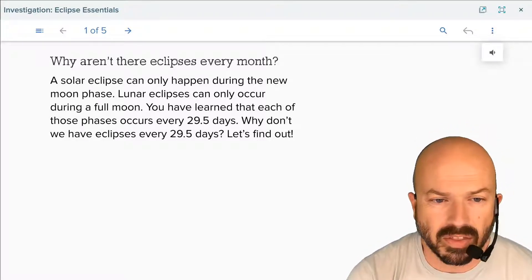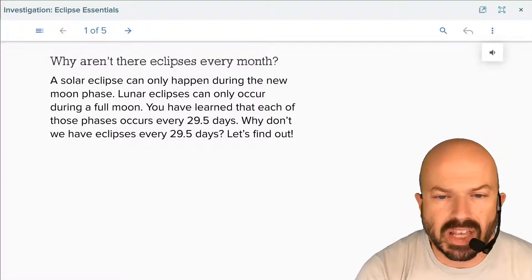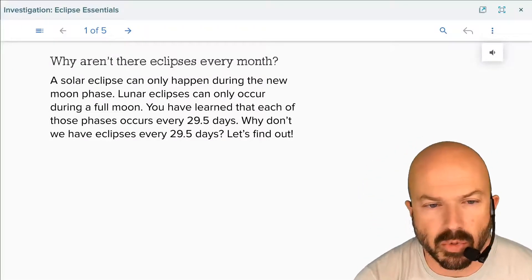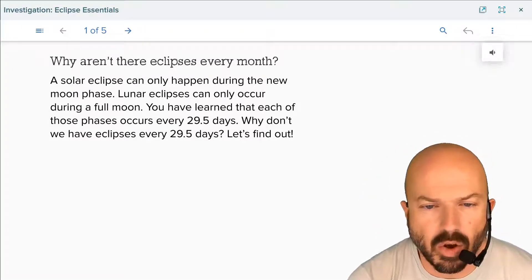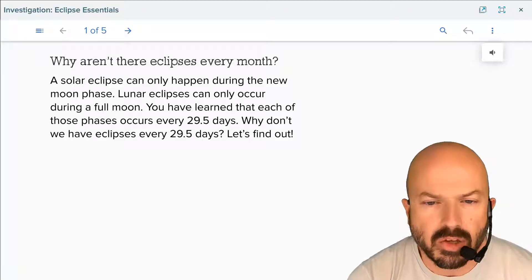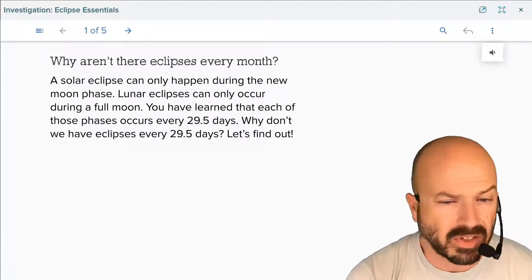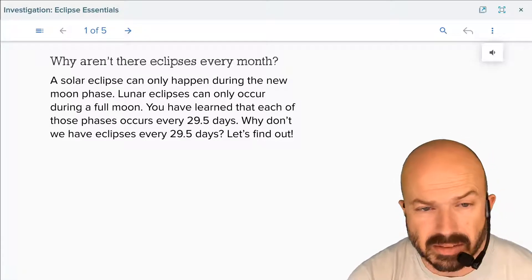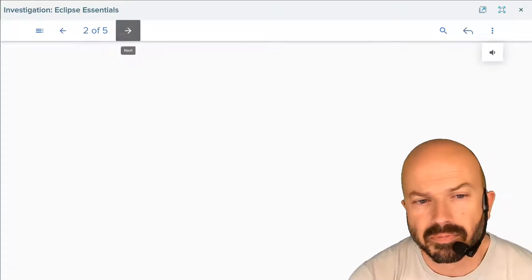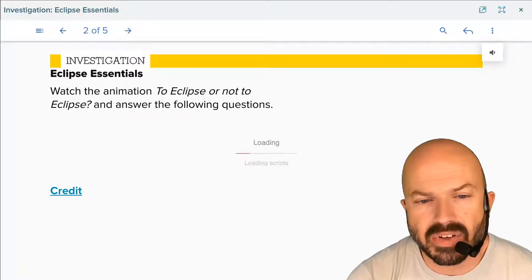So why aren't there eclipses every month? A solar eclipse can only happen during a new moon phase. Lunar eclipses can only occur during a full moon. You've learned that each of these phases occurs every 29 and a half days. So why don't we have an eclipse every 29 and a half days? Let's find out. We've got a little video to watch.